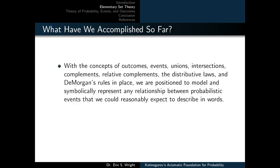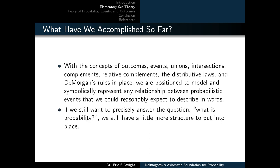With the concepts of outcomes, events, unions, intersections, complements, relative complements, the distributive laws, and De Morgan's rules in place, we are positioned to model and symbolically represent any relationship between probabilistic events we could reasonably describe in words. If we still want to precisely answer the question 'what is probability,' we still have a little more structure to put into place.